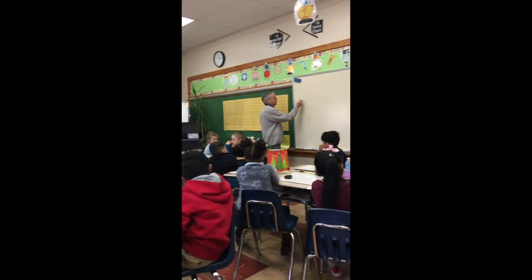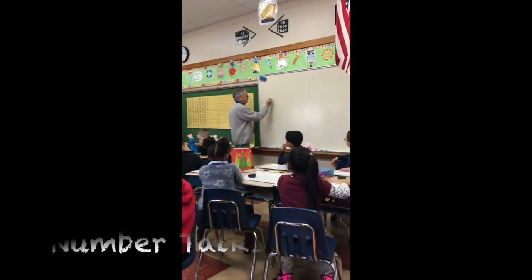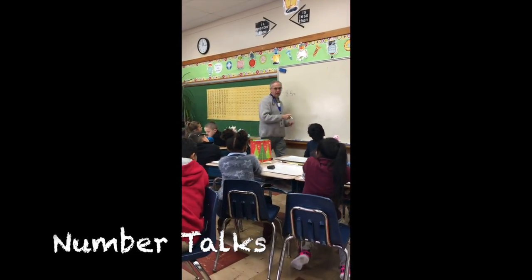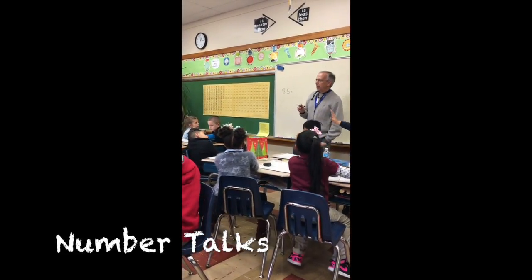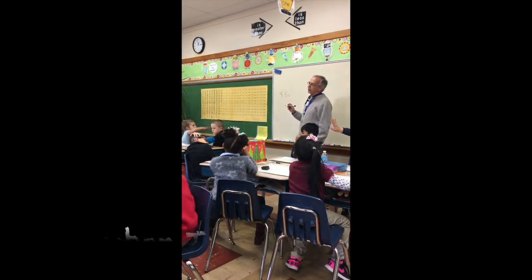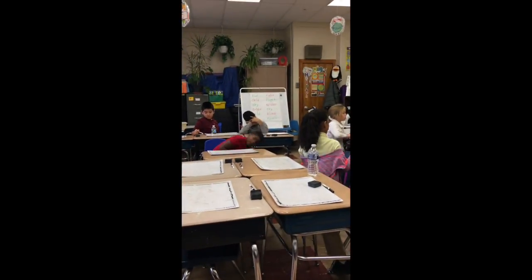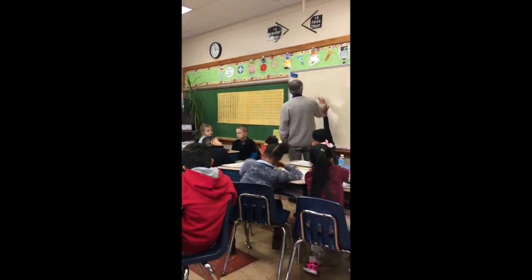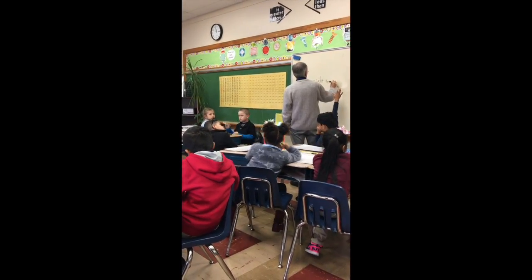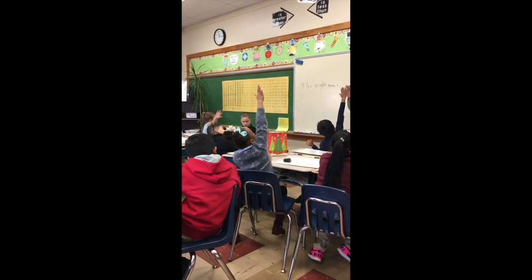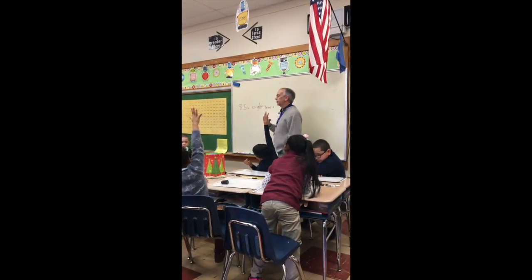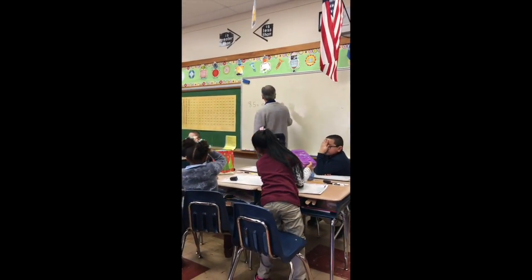One, two, three, four, five, eight, five. How many groups of 10 are in 85? How many groups of 10? Eight. Right, so we have eight tens. And how many ones are left over? Five ones. Good.